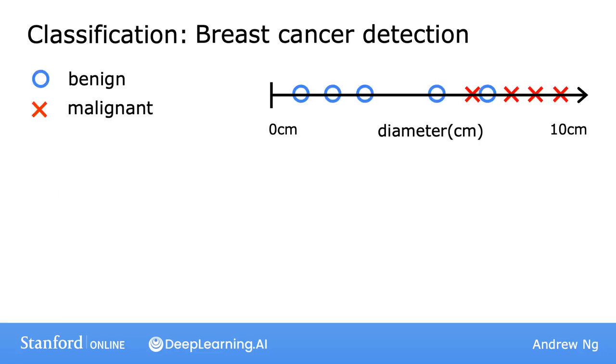It turns out that in classification problems, you can also have more than two possible output categories. Maybe your learning algorithm can output multiple types of cancer diagnoses if it turns out to be malignant. So let's call two different types of cancer type 1 and type 2. In this case, the algorithm would have three possible output categories it could predict.